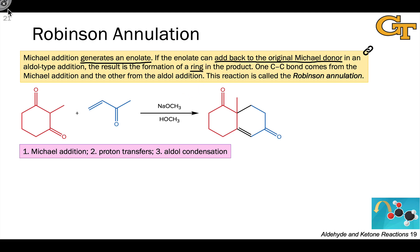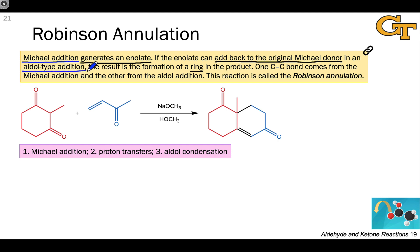The essence of this idea is that we can first do a Michael addition, which generates an enolate, and that enolate can then engage in an aldol-type reaction, which results in the formation of a ring. Because this is a ring-forming reaction, it's called an annulation — more specifically, it's called the Robinson annulation. The Robinson annulation is a beautiful application of both Michael and aldol chemistry.